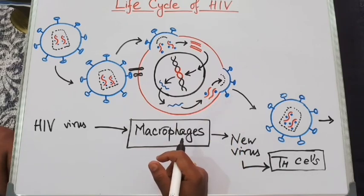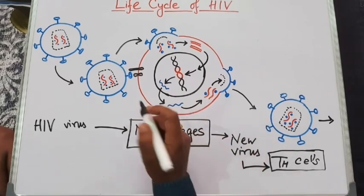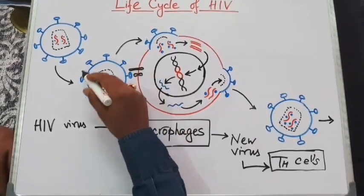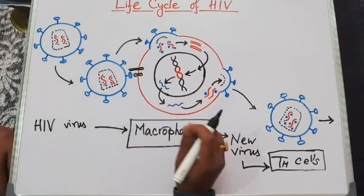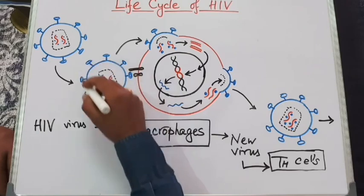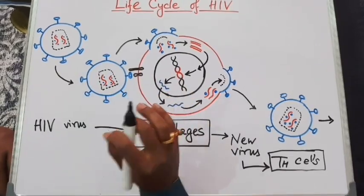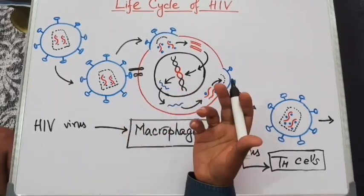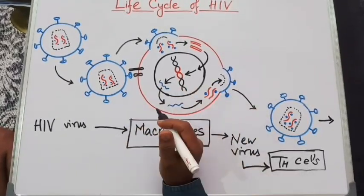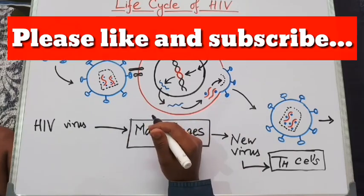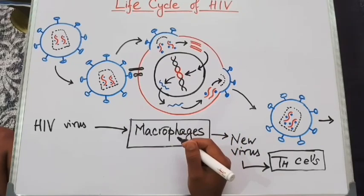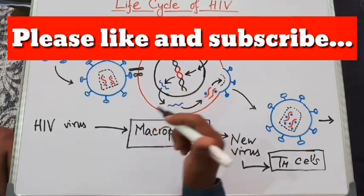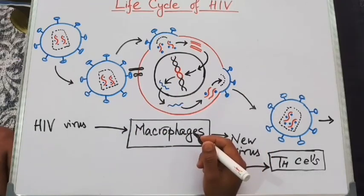The glycoprotein receptor GP120, present on the outer envelope of the HIV virus, is very mutation-prone. The virus can mutate this coating very rapidly. That's why it is very hard to design any drug or vaccine against the HIV virus. This concludes our discussion on AIDS. If you have any queries, you can ask in the comment box. We will meet again with another video next time. Goodbye.